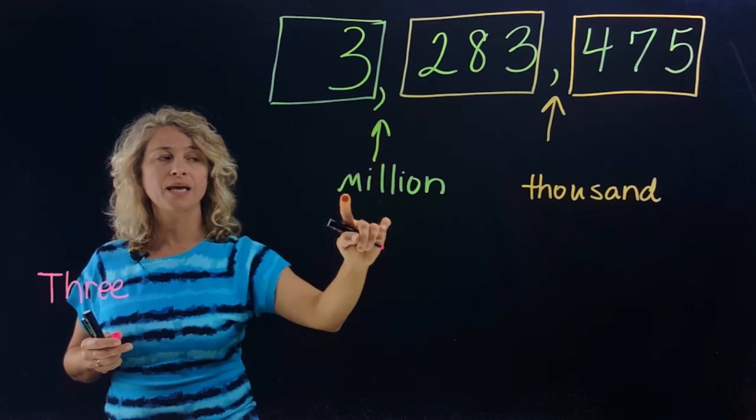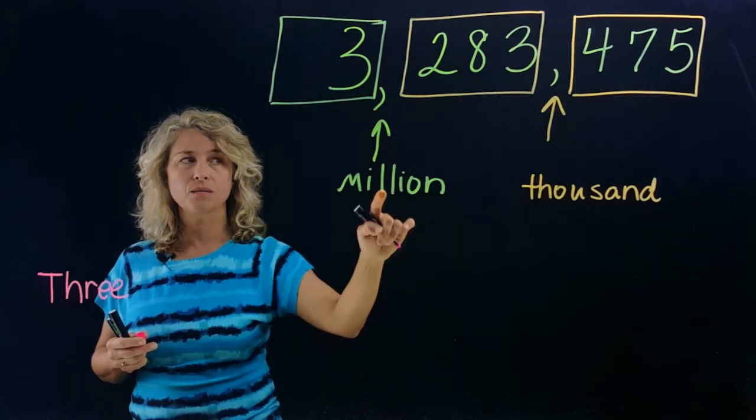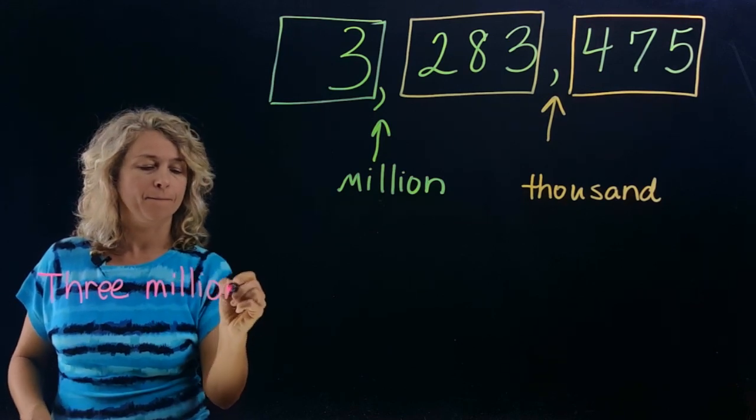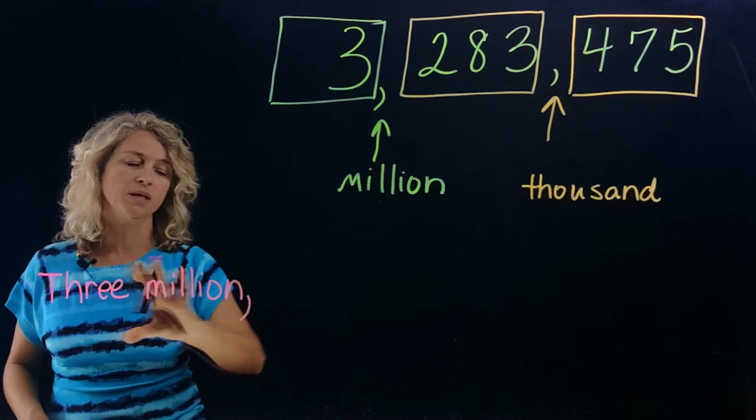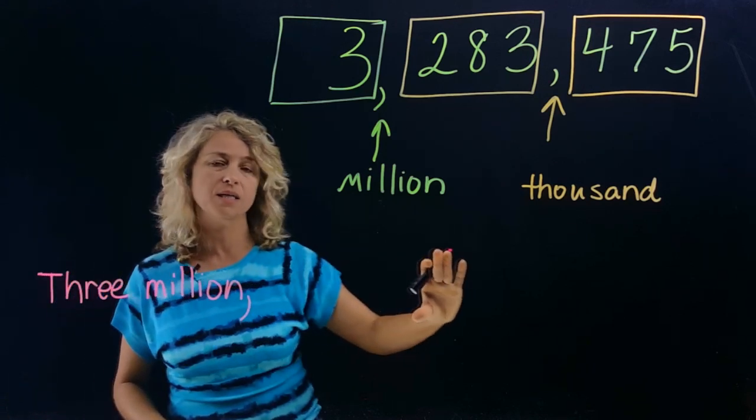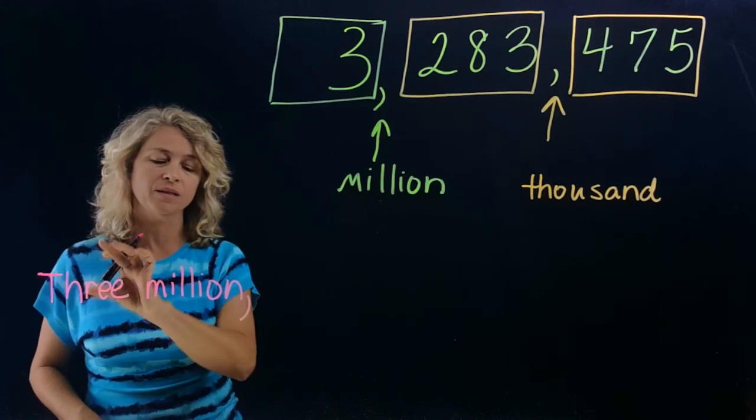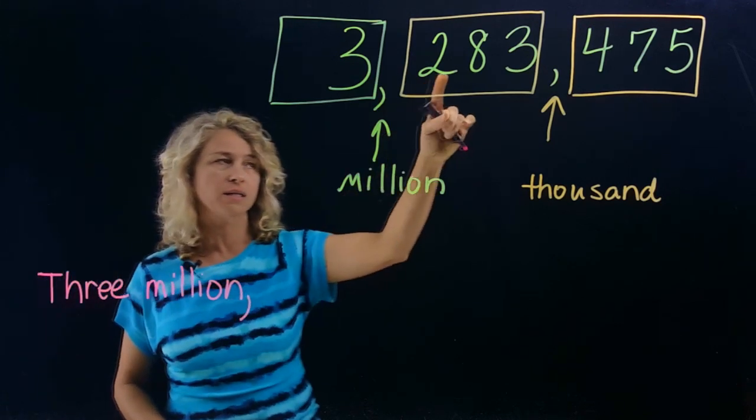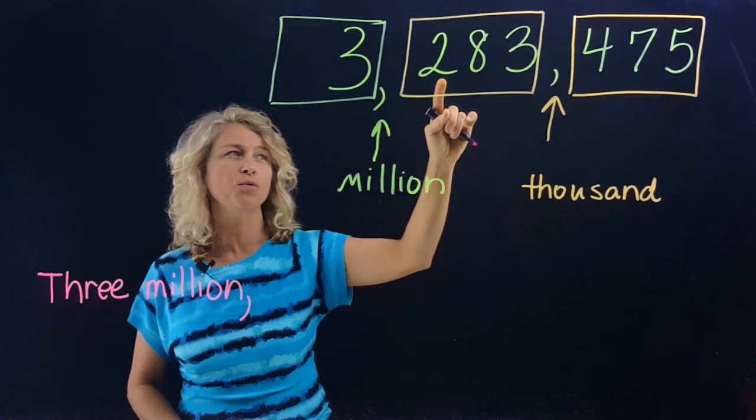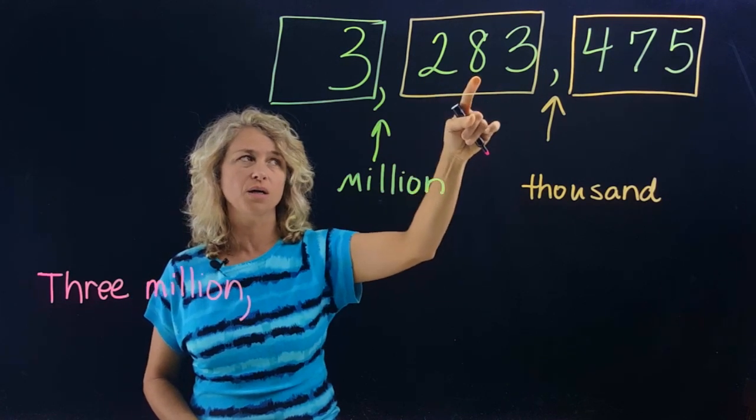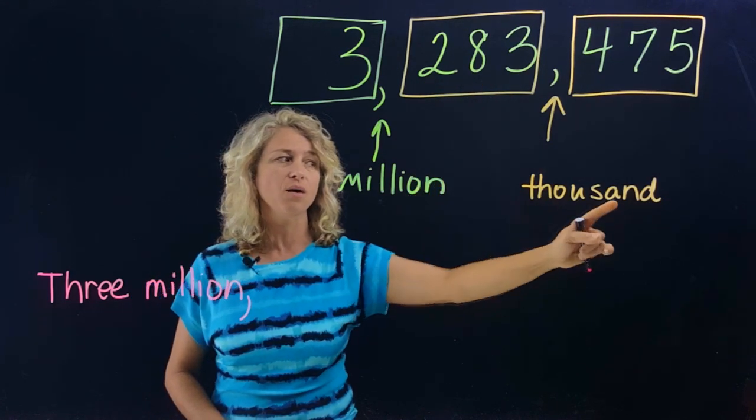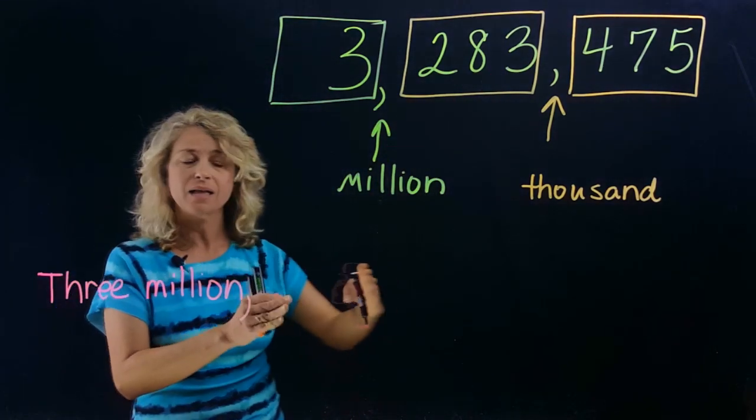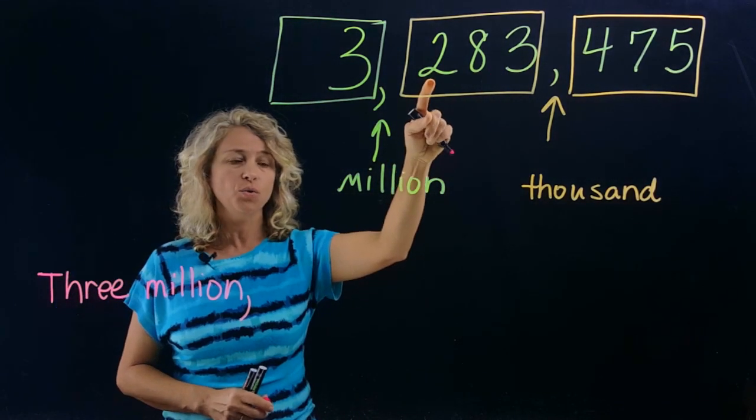Notice that I need the word 'million' because of the comma. And go ahead and put the comma as we were writing this to let us know that this is the millions place. So three million. The next words we will need will be however we say this: that's two hundred eighty-three thousand. So that's exactly however we say it, will be exactly how we will write it. That's two hundred, eighty-three.